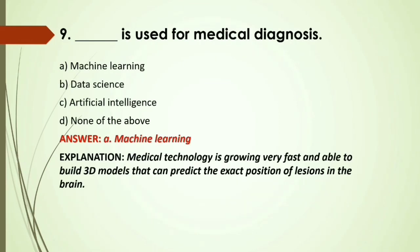MCQ: Dash is used for medical diagnosis — A) Machine learning; B) Data science; C) Artificial intelligence; D) None of the above. Answer: A, machine learning — medical technology is growing very fast and able to build 3D models that predict the exact position of elements in the brain. This is an example of machine learning.